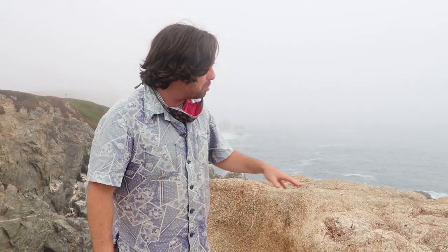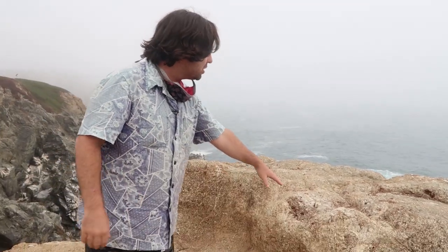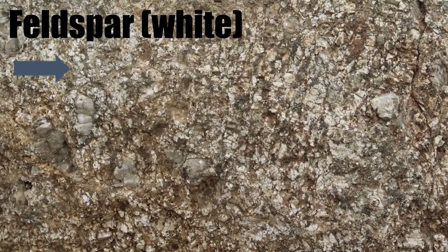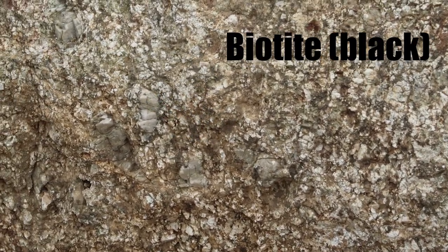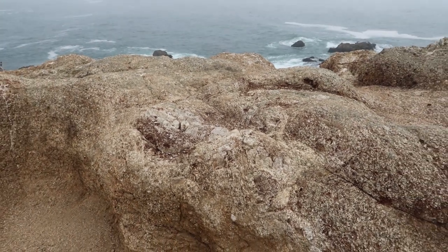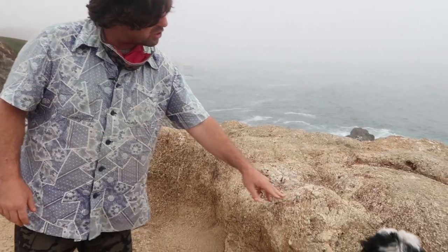Granodiorite is a plutonic rock, meaning it formed way underground by the cooling of magma. We can see some large feldspar crystals, we see quartz, and there's also some biotite mica in here as well. If you look, you can see the individual crystals that grew as the magma solidified. So we have a totally different rock — how can we explain it when it's so close to the other rock?